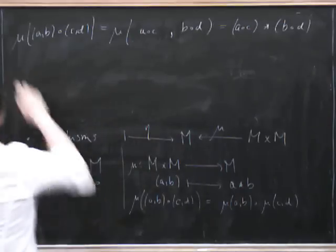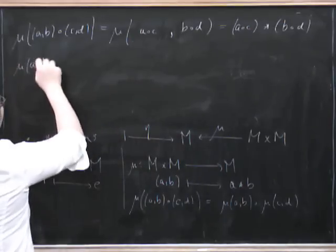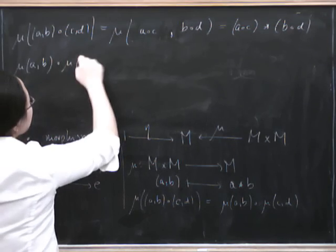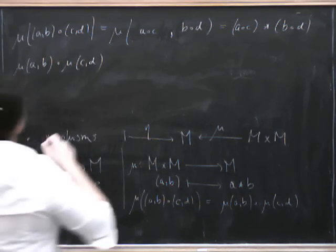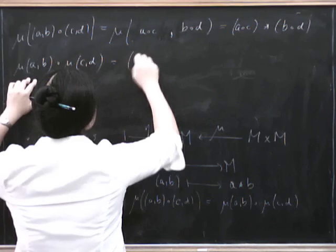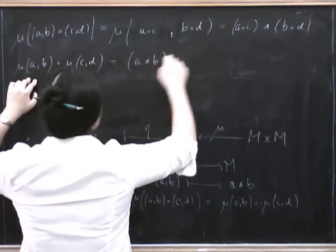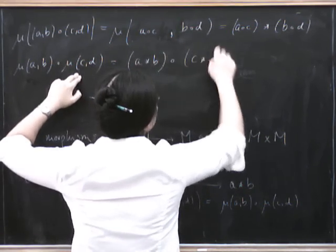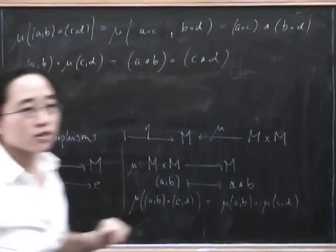So now what about this right-hand side? This is mu of (A, B) composed with mu of (C, D). Now, mu of (A, B) is just A star B. And this is composed with mu of (C, D), which is just C star D. So what this says is that these two are the same.